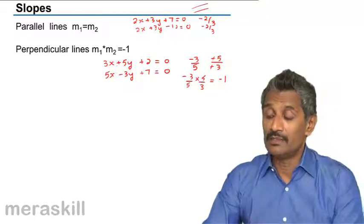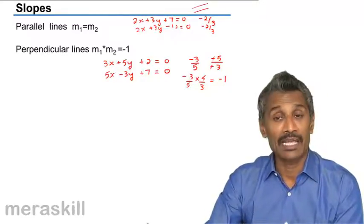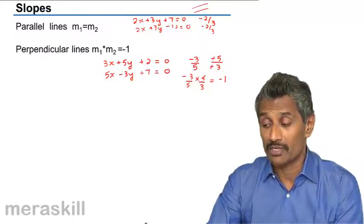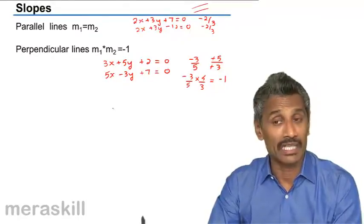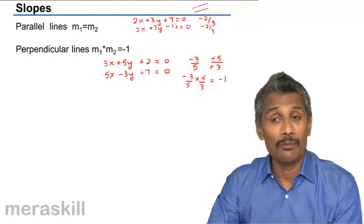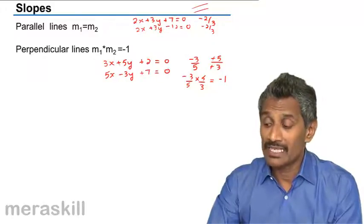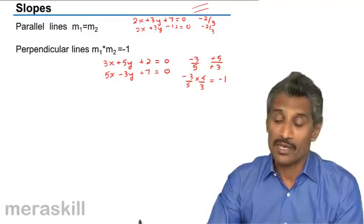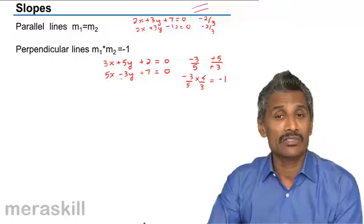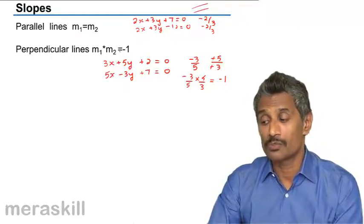That means the slopes of the lines, when you multiply them, the product is minus 1. That means the slopes are negative reciprocals of each other. Such lines are not parallel but they intersect each other at right angles. So whenever two lines intersect each other at right angles, the product of the slopes is minus 1.